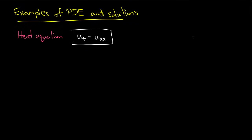Let's get our feet wet by looking at a particular partial differential equation and examples of solutions. The equation we're going to look at is u_t equals u_xx. This equation is called the heat equation. I'll explain in the next video why we call it the heat equation, but for now let's just take it as it is: u_t equals u_xx.